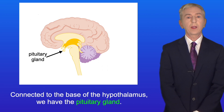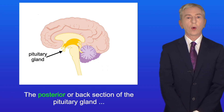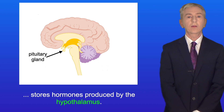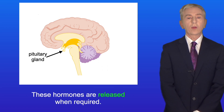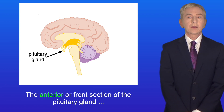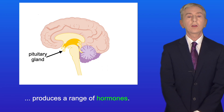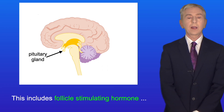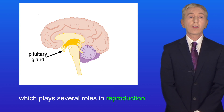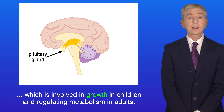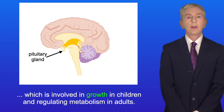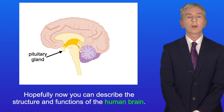Connected to the base of the hypothalamus is the pituitary gland. The posterior section stores hormones produced by the hypothalamus, including ADH or antidiuretic hormone, which are released when required. The anterior section produces a range of hormones, including follicle stimulating hormone, which plays several roles in reproduction, and growth hormone, which is involved in growth in children and regulating metabolism in adults. Hopefully you can now describe the structure and functions of the human brain.